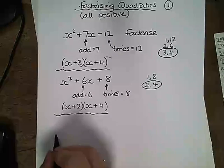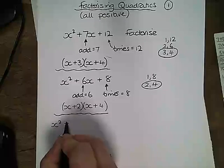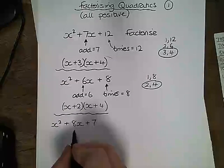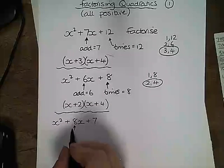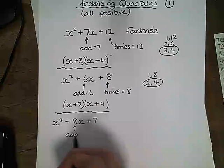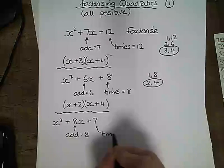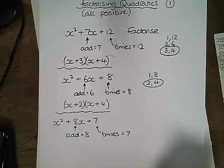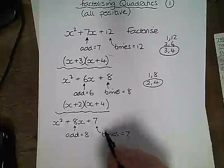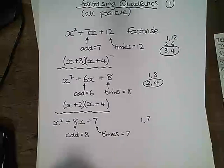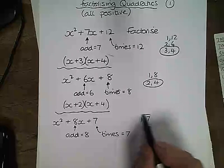If we have x squared plus 8x plus 7, we are looking for two numbers which add to give 8 and times together to give 7. Now 7 is a prime number so it only has one factor pair and that's 1 and 7. And fortunately, if you add 1 and 7, you get 8.